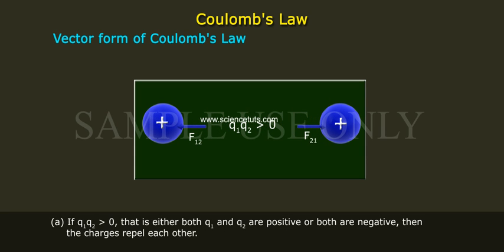Vector form of Coulomb's Law. If Q1 Q2 greater than 0, that is either both Q1 and Q2 are positive or both are negative, then the charges repel each other.